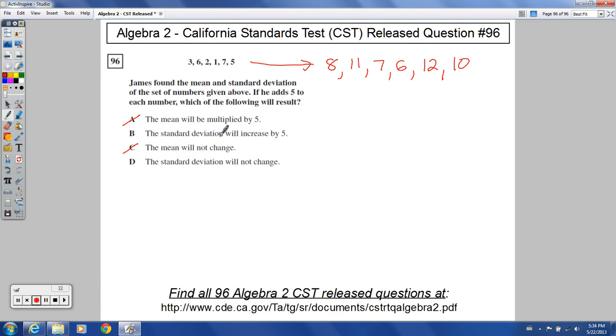So between these two, the standard deviation increasing by 5 or the standard deviation not changing. A standard deviation is a measure of the spread of the data. Is this any more spread out than this was over here? No. We added 5 to all the values, but the values are all still the same distance away from each other on a number line. You can think of it like that. This is still 3 away, just like it was here. So we've really just pushed the mean forward, but without increasing or decreasing the standard deviation.